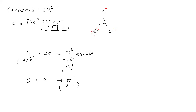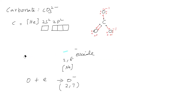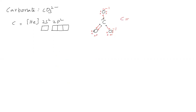An O⁻ ion has configuration 2,7 — the valence shell has 7 electrons and needs one more for octet, so it can form one sigma bond. Therefore the minus 2 is split as minus 1 to one oxygen and minus 1 to another oxygen. The neutral oxygen valence shell has 6 electrons, while each O⁻ valence shell has 7 electrons. Bonding: one double bond and two single bonds are given.